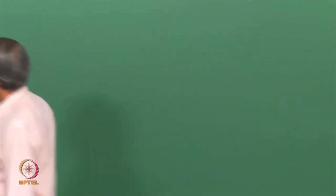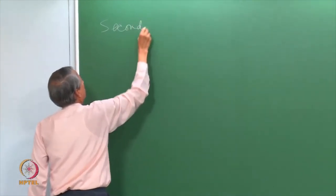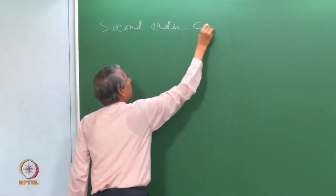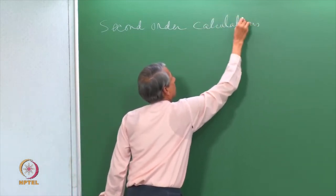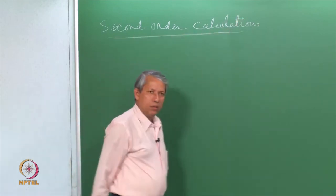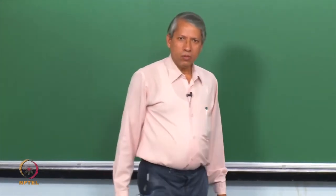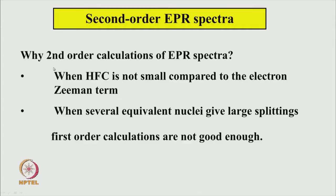Earlier we saw how to calculate spectrum up to first order. Now, why bother with second order calculation? Because first order calculations gave quite a good interpretation of most of the spectrum that we saw so far, but sometimes that is not sufficient. Here are two important reasons: when the hyperfine coupling constant is not small compared to the electron Zeeman term, or when there are several equivalent nuclei giving large splittings. In that case, first order calculations are not good enough.